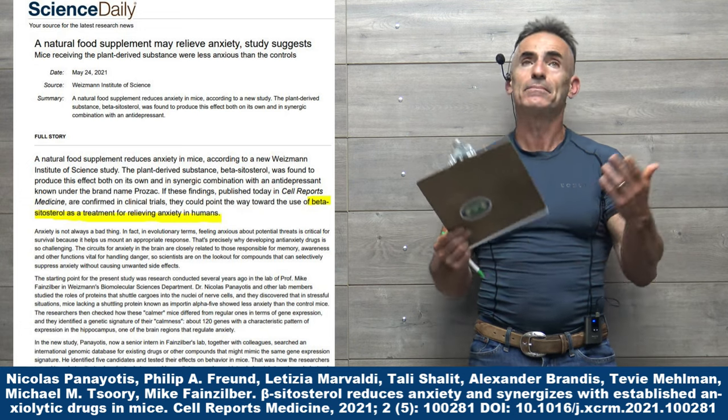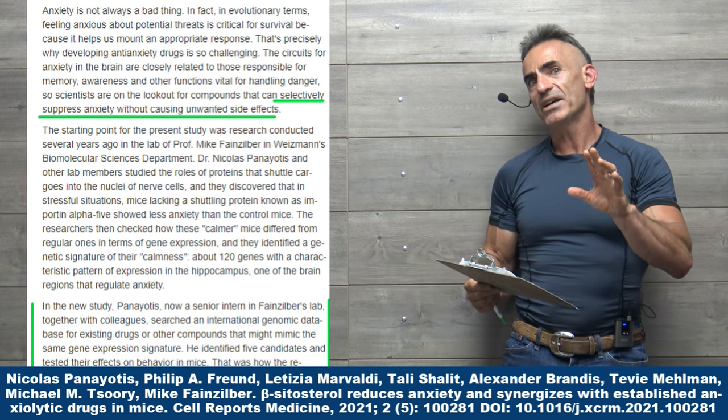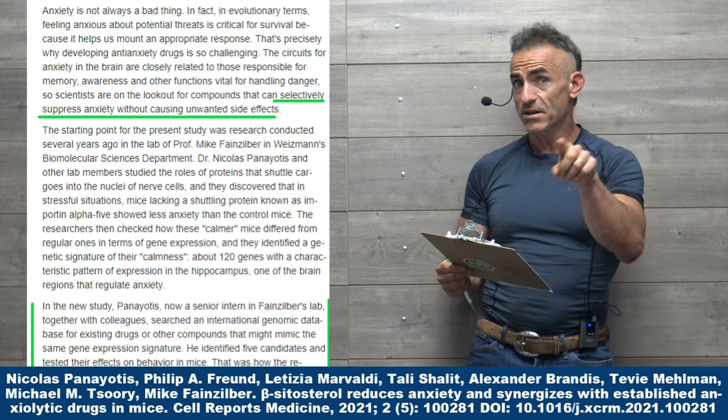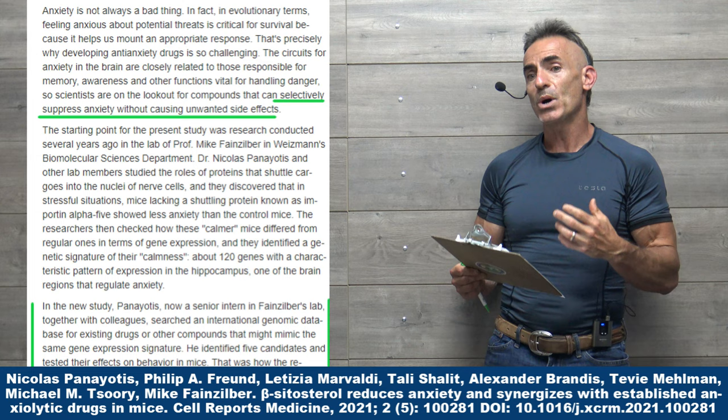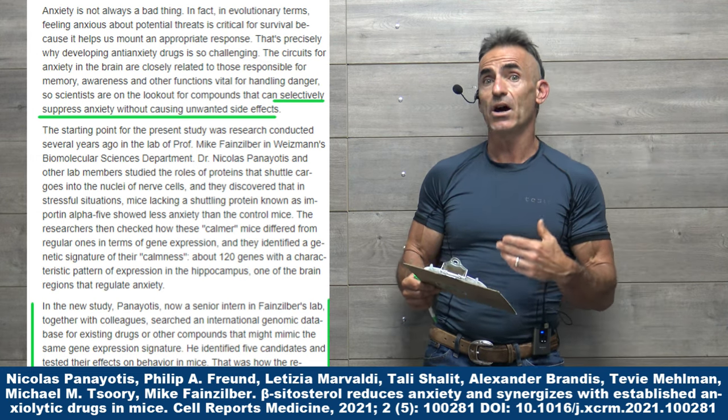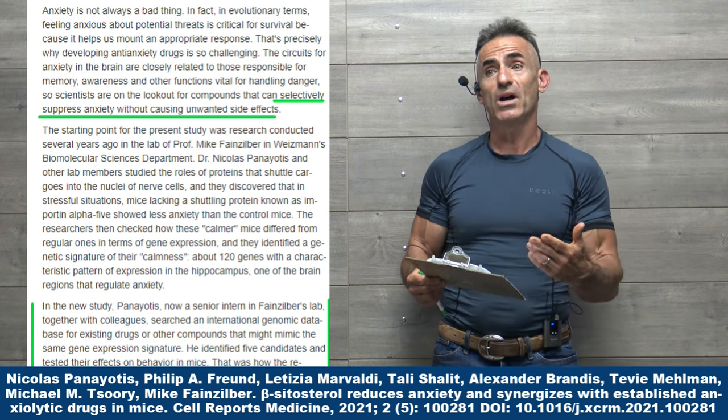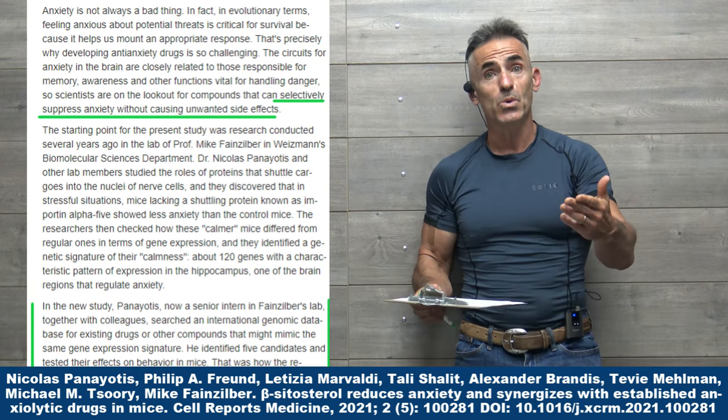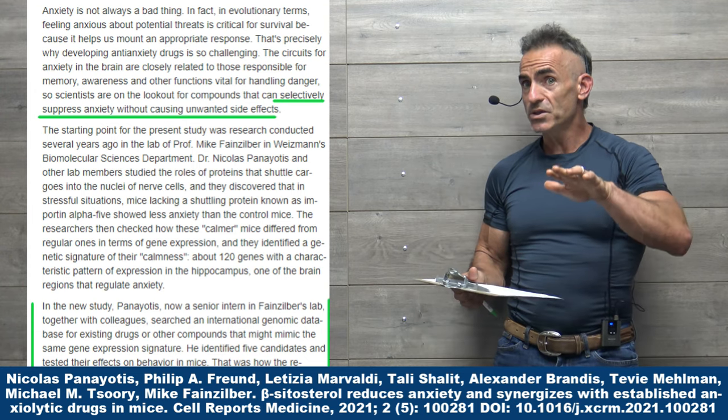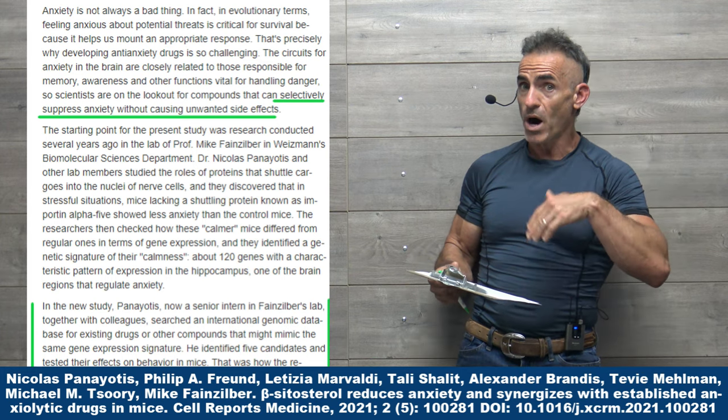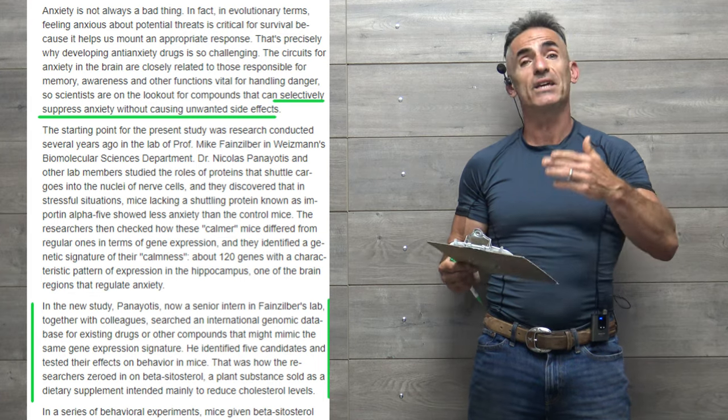If these findings published today in Cell Reports Medicine are confirmed in clinical trials, they could point the way towards the use of beta-sitosterol as a treatment for relieving anxiety in humans. Keep in mind the interesting aspect: beta-sitosterol worked well on its own, but at the same time, they found in the animal model they were able to reduce the dosaging down on the Prozac or fluoxetine in such a way to reduce a lot of the side effects or unintended consequences of that medication as well.